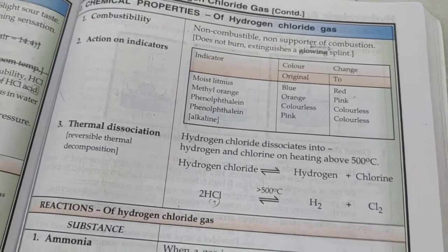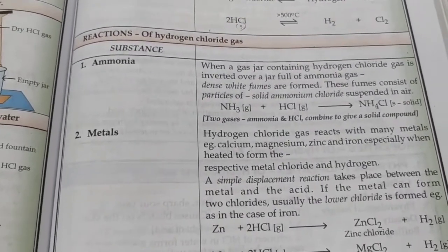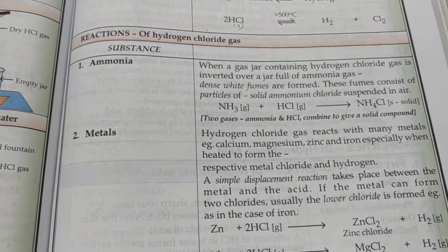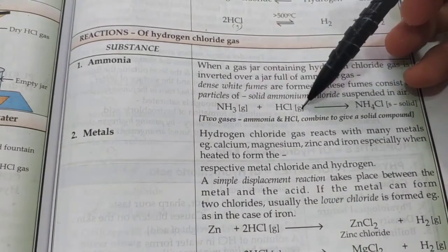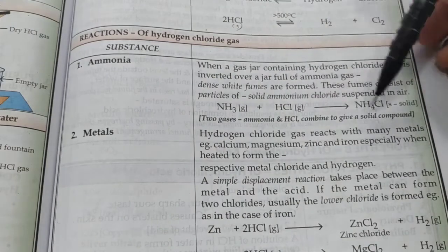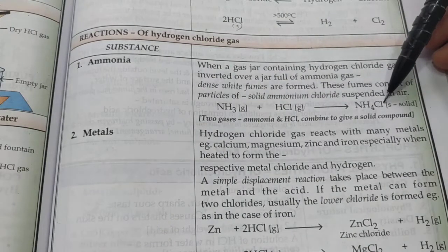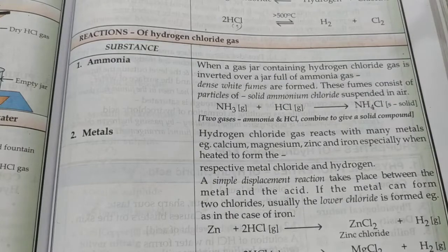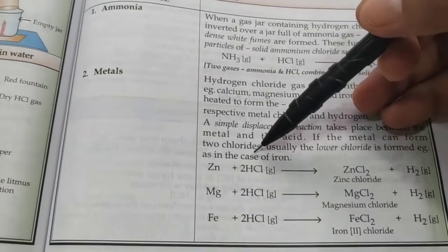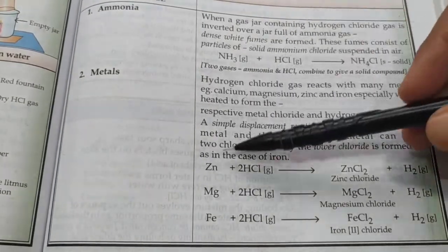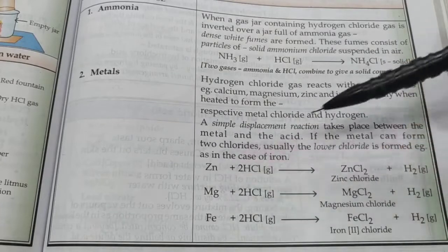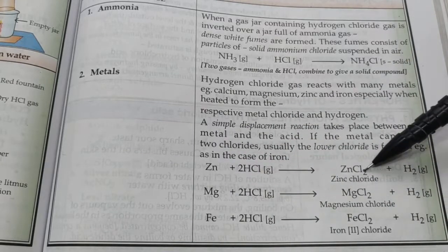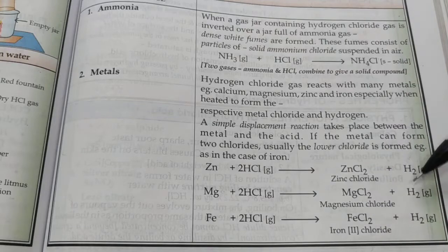Some reactions of hydrogen chloride gas: when ammonia gas, which is a basic gas, reacts with HCl, they combine to form ammonium chloride, producing dense white fumes. HCl gas also reacts with some active metals in a simple displacement reaction, producing the respective chloride salts and releasing hydrogen gas.